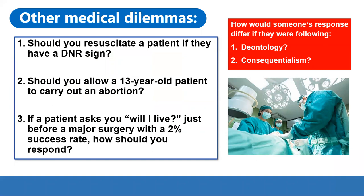Here are a few other medical dilemmas which involve deontology and consequentialism. Think about how a doctor's response would differ in these situations. The first question is: should you resuscitate a patient if they have a DNR sign? Also known as a DNAR — do not attempt resuscitation. This means a doctor would not perform CPR on the patient, often because the patient is worried about brain damage from CPR, which can have adverse effects on their quality of life afterwards.